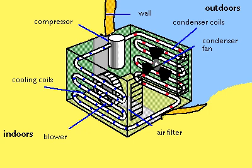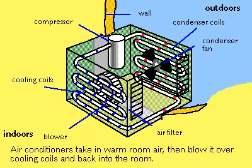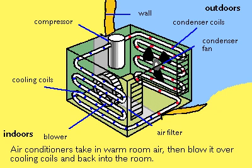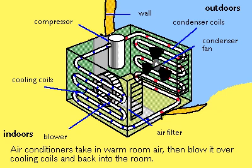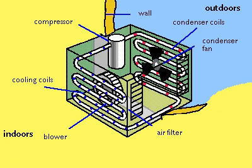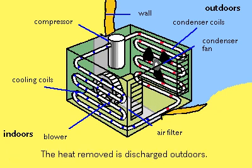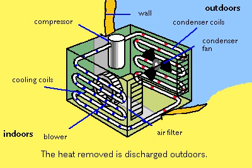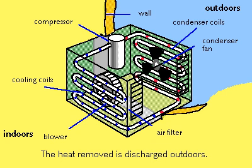Air conditioners are heat exchangers. They take warm air from a room, blow it over cooling coils to remove the heat, and then return it to the room. The heat absorbed by the cooling coils is then blown outdoors.